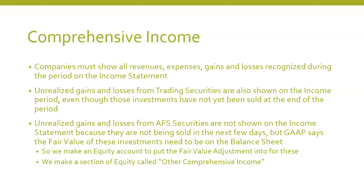Revenues and gains are pluses, and expenses and losses are minuses. All of those things get closed into income summary and then from income summary into retained earnings. Now, unrealized gains and losses from available-for-sale securities are not shown on the income statement because they're not being sold in the next few days, but GAAP says the fair value of these investments needs to be on the balance sheet.